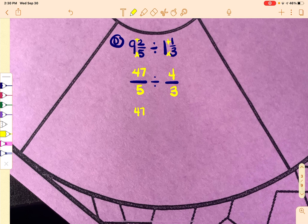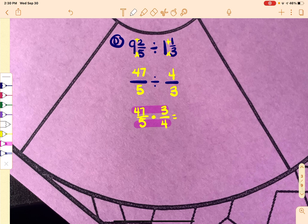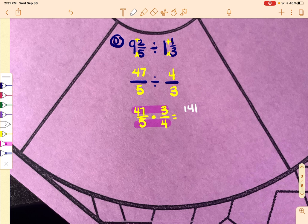Okay, now we're going to do keep, change, flip. And now we can go ahead and multiply across. So 47 times 3 is 141, and 5 times 4 is 20.